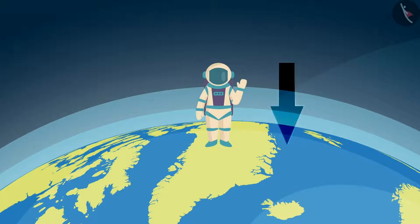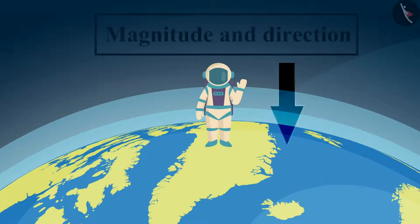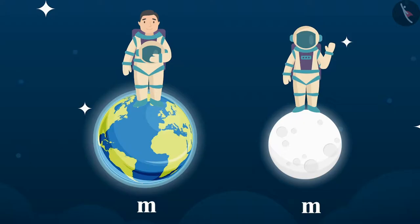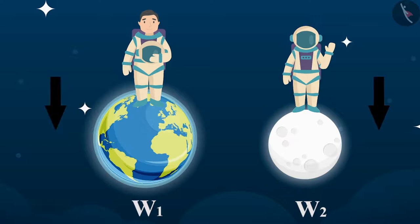Weight is a force which acts vertically downwards, so it has both magnitude and direction. Another important distinction is that the mass of an object remains the same everywhere, whereas the weight of an object varies with the position of the object, because acceleration due to gravity varies with position.